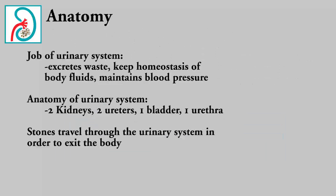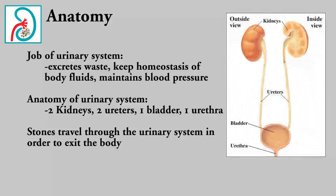The urinary system is responsible for excreting waste and maintaining homeostasis of body fluids and blood pressure within the body. The anatomy involves two kidneys, two ureters, one bladder, and one urethra. A stone will start in the kidneys and travel through the rest of the urinary system in order to exit the body.